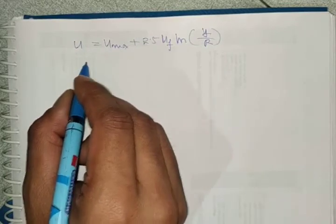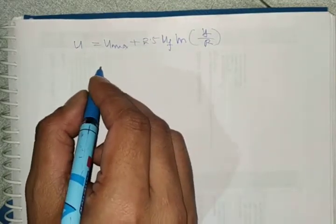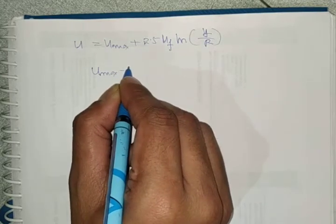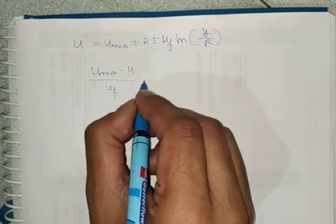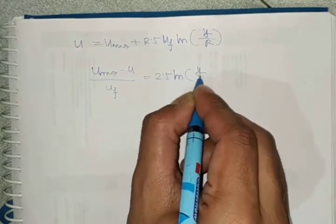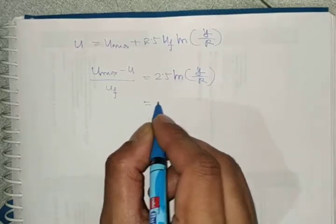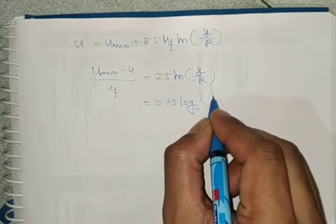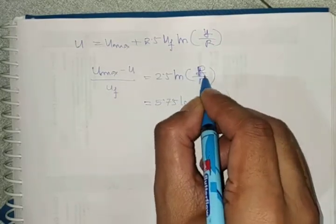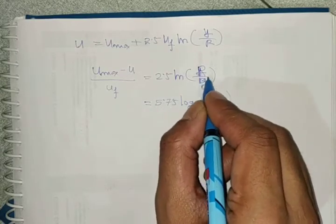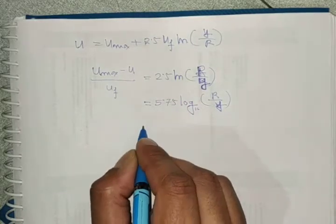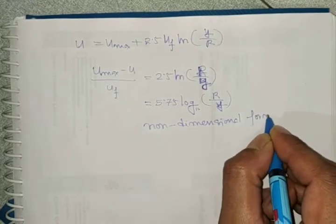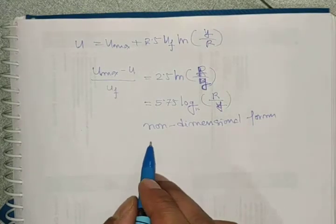Another form of this equation is the non-dimensional form: (u_max − u) / u_f = 2.5·ln(r/y), or equivalently 5.75·log₁₀(r/y). This is called the non-dimensional form of the Prandtl Universal Velocity Distribution Equation.